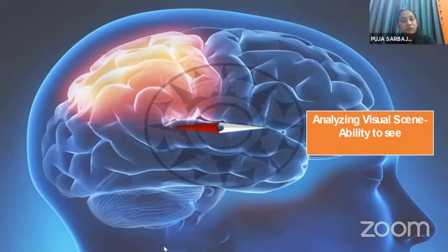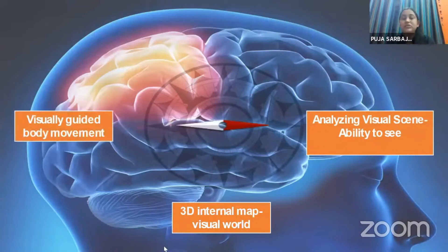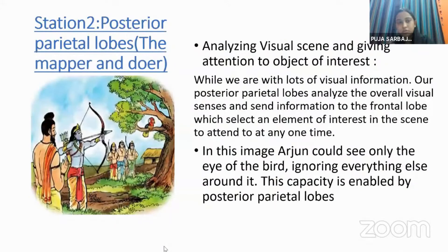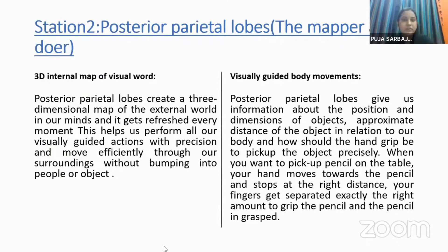Station 2, the posterior parietal lobe, acts as a mapper and doer. An example: Arjun can place an arrow precisely in a bird's eye despite many other objects present — that is exactly what the posterior parietal lobe enables. It analyzes overall visual senses and sends those senses to the frontal lobe. Two other functions are 3D internal mapping of the visual world and body guidance.